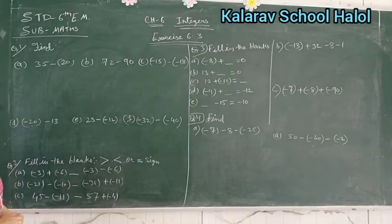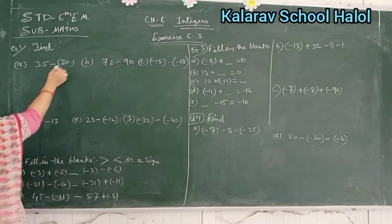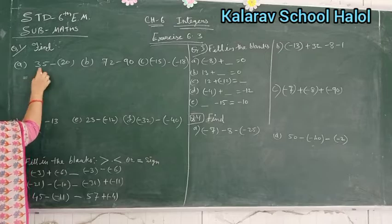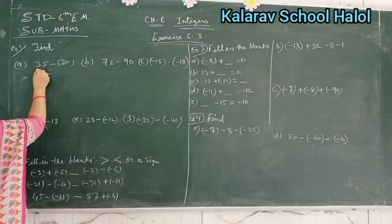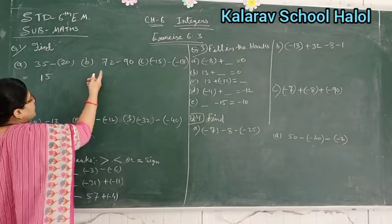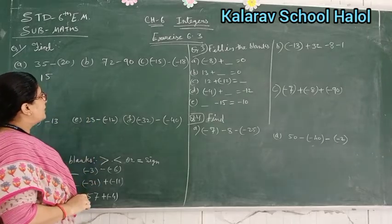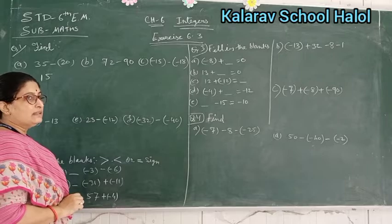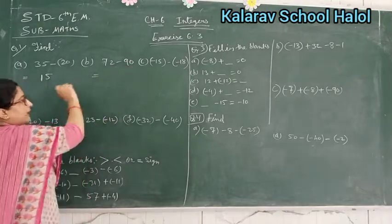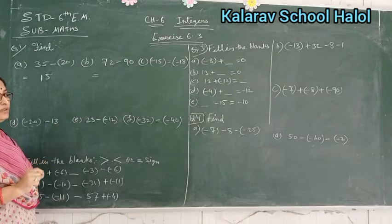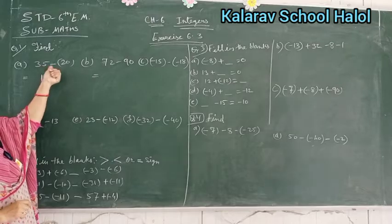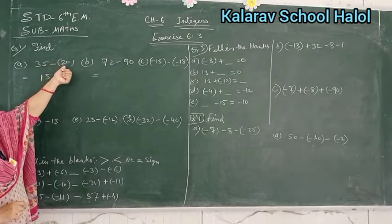Question number 1a is 35 minus 20. We have subtraction signs here. 35 minus 20: 3 minus 2 is 1, so the answer is 15. For question 1b, 72 minus 90 — here 90 is bigger than 72, and 35 is bigger than 20.